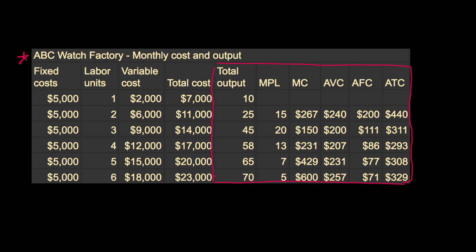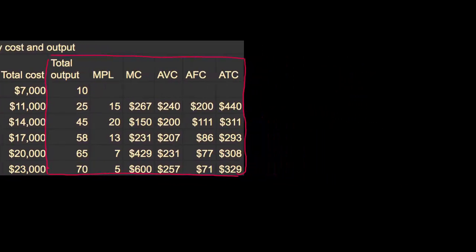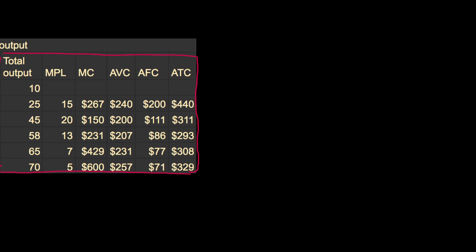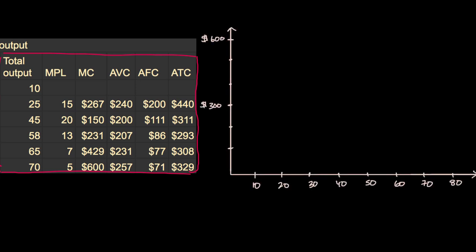What we're going to do in this video is take this information — especially total output and all of these calculations — and graph it so we can better appreciate how these various curves are interrelated. Let me set up a coordinate plane with cost on the vertical axis and output on the horizontal axis.